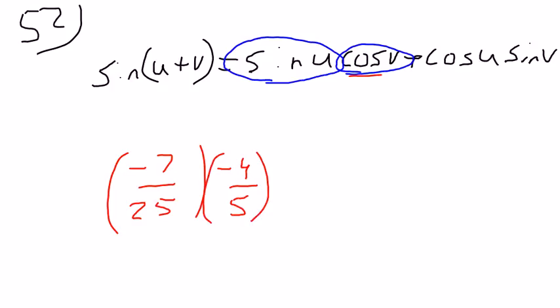So now we need to figure out what cosine of u is and sine of v is. What we're going to do is make two triangles, the u triangle and the v triangle.